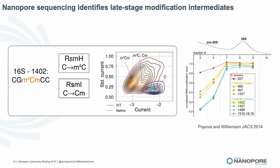Coming back to the 1402 modification — in E. coli, this modification is completed through two different enzymatic events: RSMH, which adds the base methylation, and RSMI, which adds the 2-O sugar methylation. We actually see these intermediate steps if we plot the single-molecule standard deviation of the current versus the current, shown here in density plots. In blue is the in vitro transcribed molecule; in orange and red is the native. We see even in the native sample some completely unmodified C residues, followed by a monomethylated state, and finally the most prevalent full dimethyl modification.